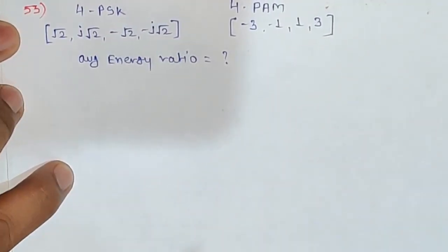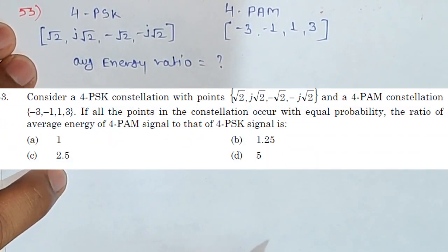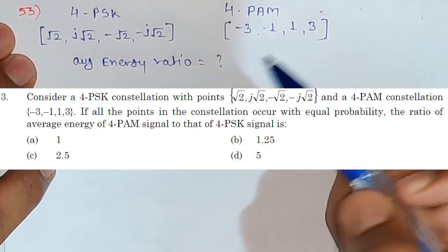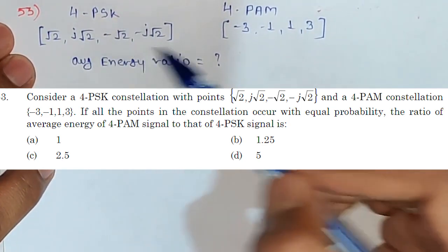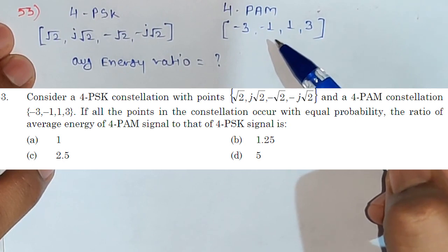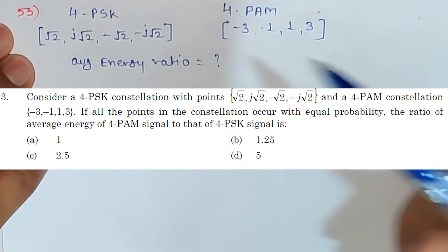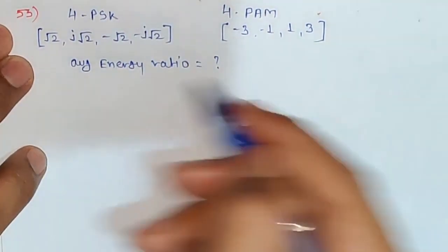Hello friends, welcome to GateGyam. We are going to discuss question number 53 from ISRO 2018 paper. In this question, we are given 4-PSK constellation points and 4-PAM constellation points, and we have been asked to find out what will be the ratio of the average energy of these two.